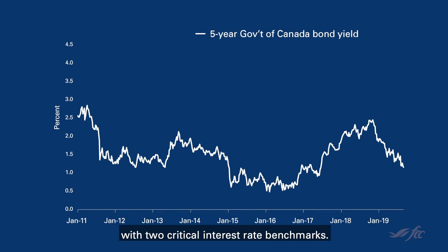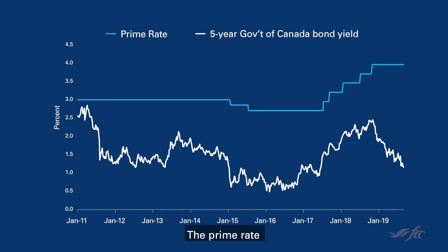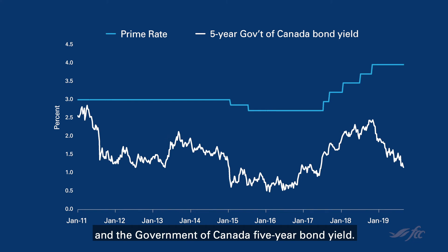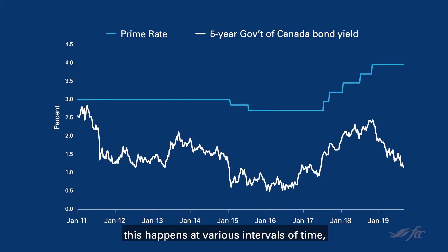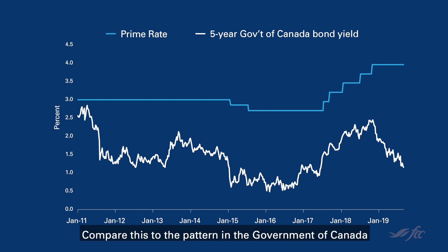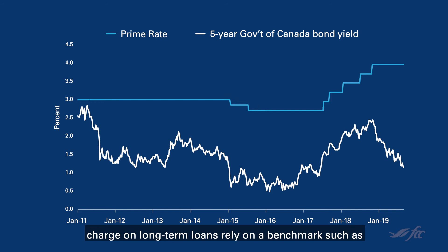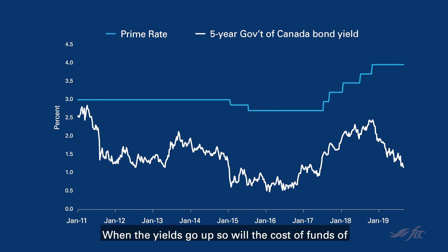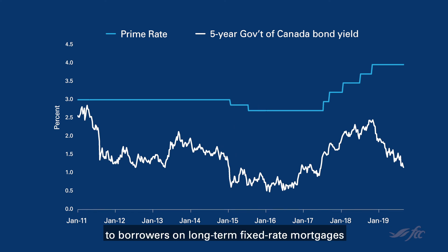Consider the following chart with two critical interest rate benchmarks: the prime rate and the Government of Canada five-year bond yield. The prime rate moves when there's a change in the overnight rate, and you see this happens at various intervals of time — somewhat of a stepwise pattern on the chart. The rates financial institutions charge on long-term loans rely on a benchmark such as the Government of Canada five-year bonds. When the yields go up, so will the cost of funds of financial institutions, and thus interest rates charged to borrowers on long-term fixed-rate mortgages would also go up.